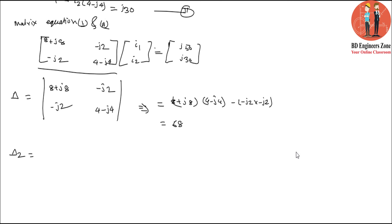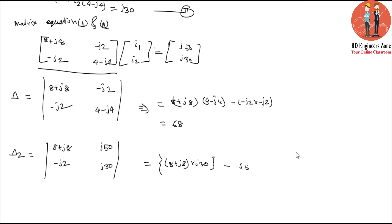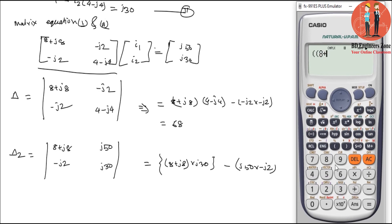Now we will compute delta 2. Del2: 8 plus j8, minus j2, j50, j30. Calculating: j8 plus j8 plus j30, then 8 plus 8i, 30i, 30i, 50i minus 2i, giving 30i.